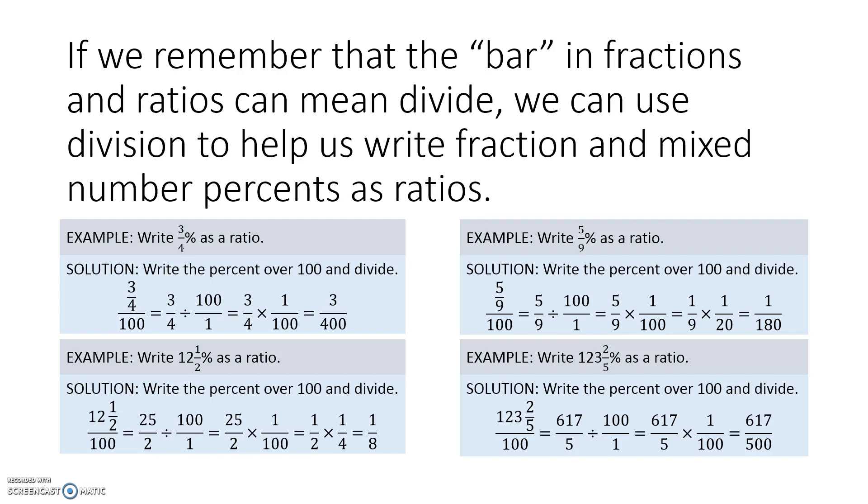Now you might recall that the last example on the previous slide also came out to 617 to 500. That percent was 123.4 percent. Well, 0.4 and 2/5 are the same number. So 123 2/5 percent is the same as 123.4 percent. So they would give us the same ratio. Now you should be able to finish the problems for this section.